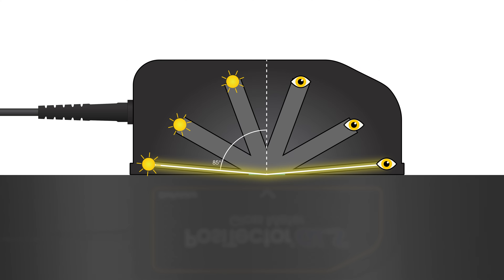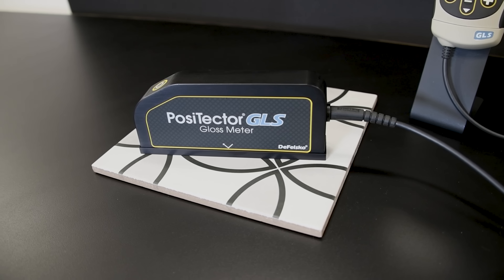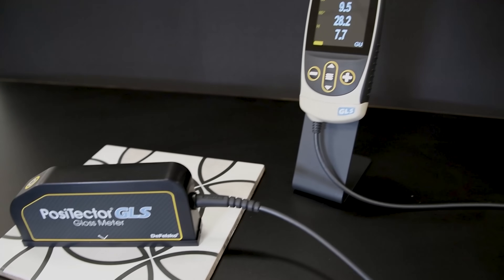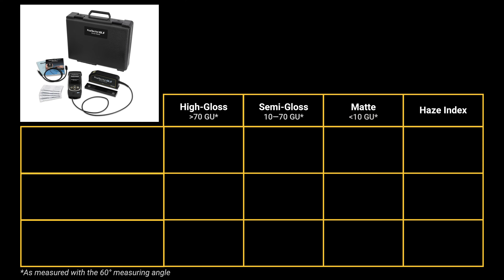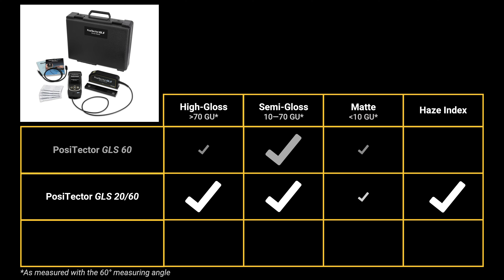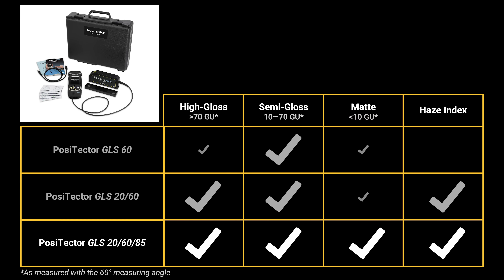Gloss measurements in this range are commonly seen on products such as fabrics, leather, and military assets. The Positector GLS Gloss Meter is the ideal instrument for quality control specialists. Three probe models are available. The Positector GLS-60 is suitable for most gloss applications and is the preferred angle for measuring semi-gloss. The Positector GLS-2060 is ideal for high to semi-gloss applications and has the ability to calculate haze index. The Positector GLS-2060-85 is suitable for all gloss applications — high, semi, and matte — and is also capable of calculating haze index.